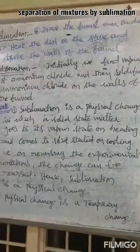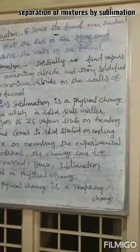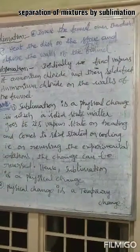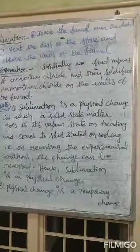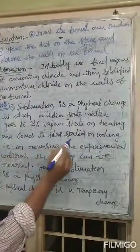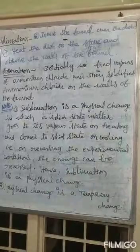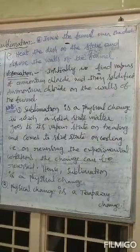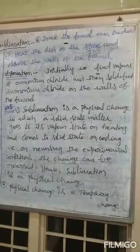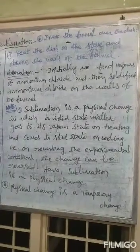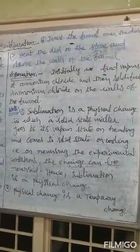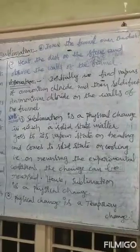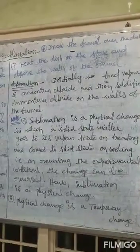What is sublimation? Sublimation is a physical change in which a solid state matter goes to its vapor state on heating and comes to solid state on cooling. On reversing the experimental conditions, the change can be reversed. Hence, sublimation is a physical change.